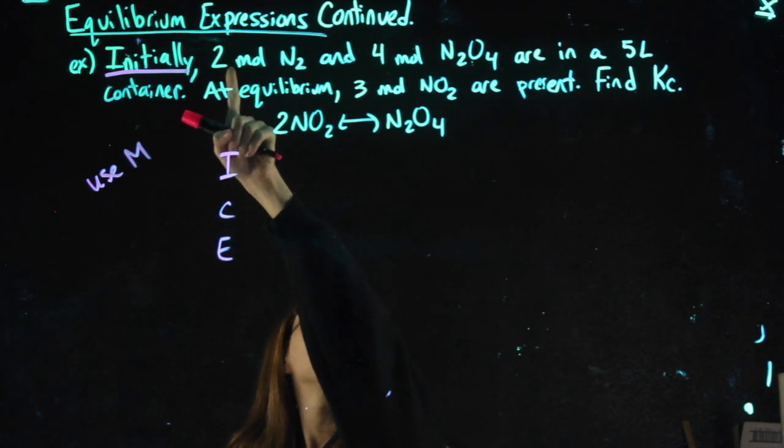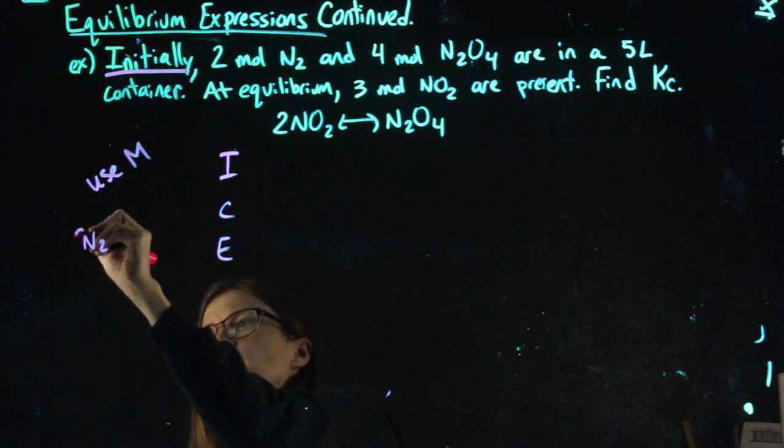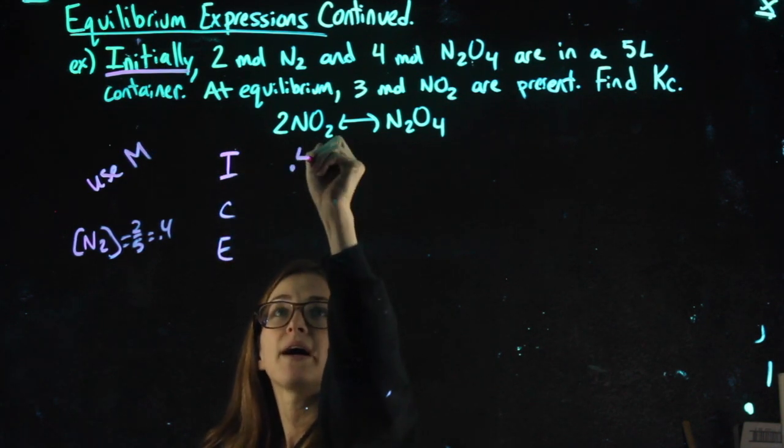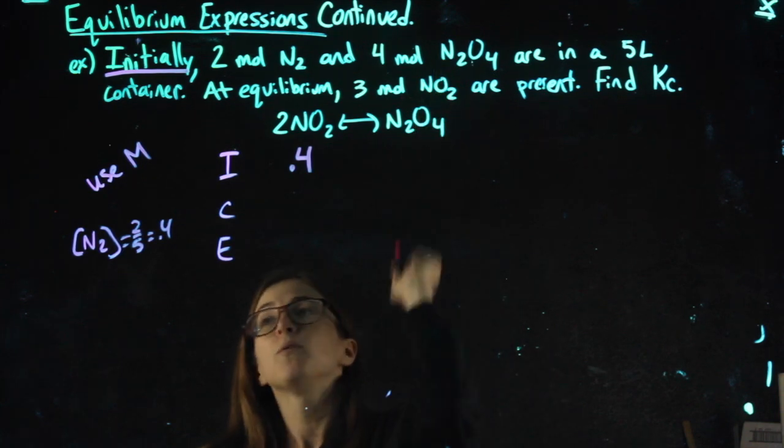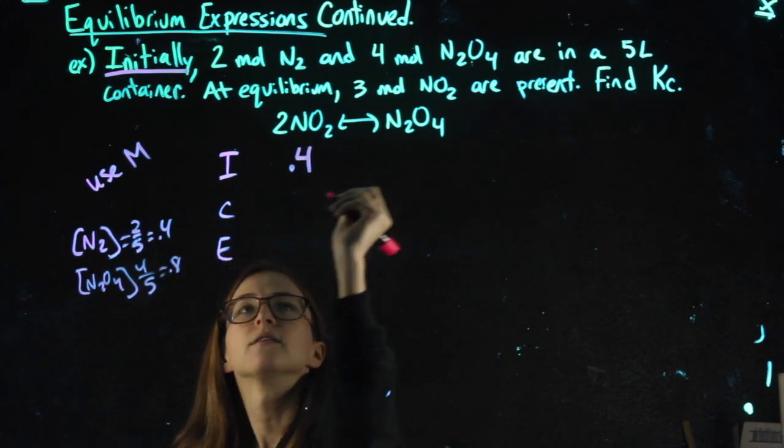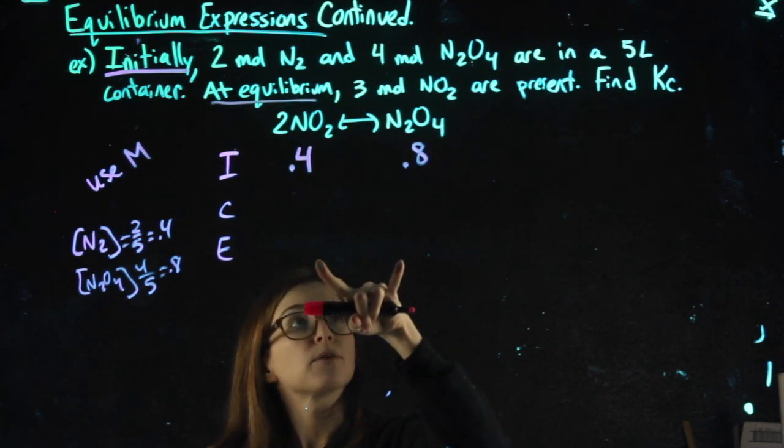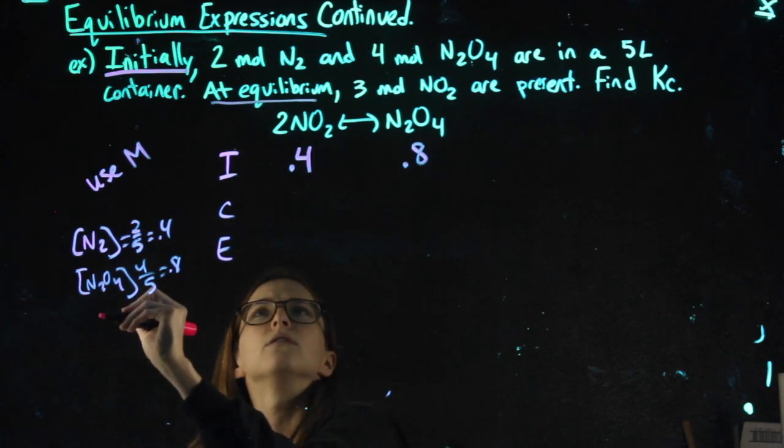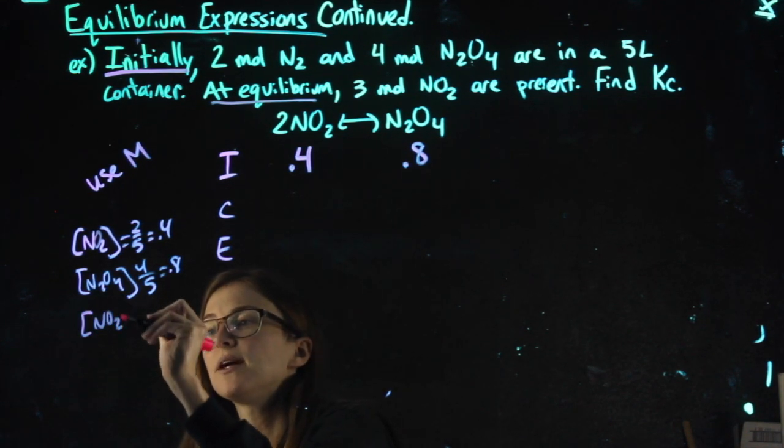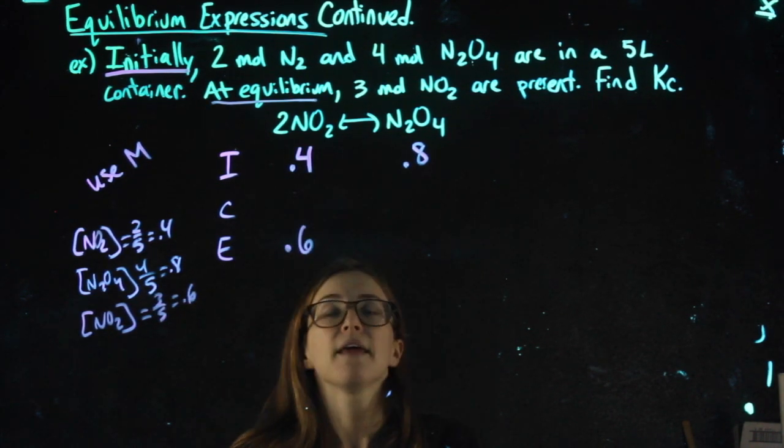Initially, we have two moles of N2. Two moles divided by the five liters for N2. That gets me 0.4. And that's an initial value. So that'll go in my I row. And four moles of N2O4. So for N2O4, four moles in the five liter container. Then it says at equilibrium. So now in my equilibrium row, three moles of NO2. Oh, I miswrote this. That should have said NO2 the whole time. So now I have NO2 at equilibrium. It's a new value. Three divided by five is 0.6. And that's all I'm given.